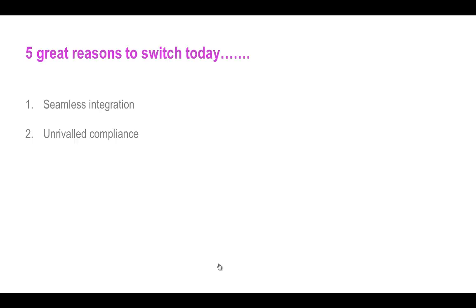The second great reason to switch to Sage is our unrivalled compliance. The HMRC-recognised Sage Assisted Tagging solution identifies up to 10% more automated tags than other compatible IXBRL software and is up to 75% faster than competing products. We'll now have a look at how easy we make IXBRL compliance using our Assisted Tagging tool.